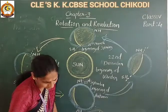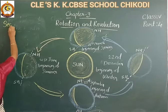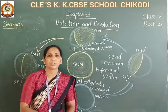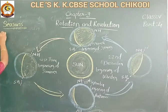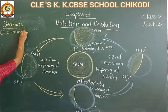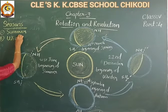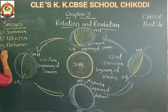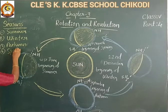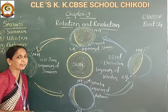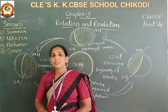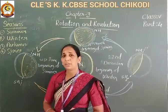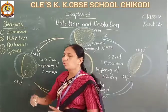Next, the concept of the seasons of the earth. There are four seasons on the earth: first, summer season; second, winter season; third, autumn season; and fourth, spring season.